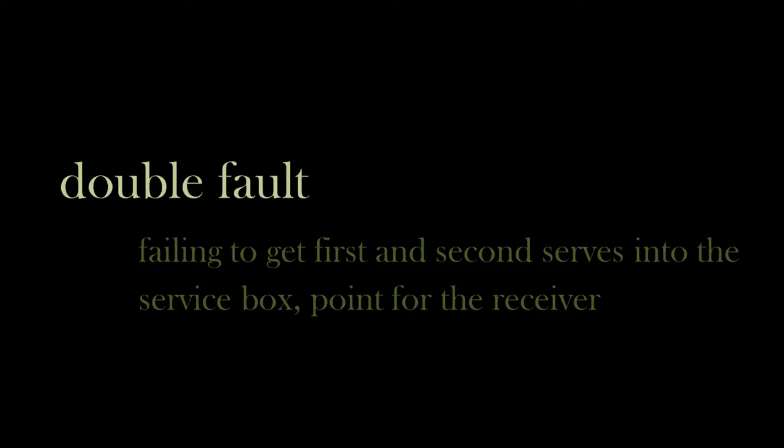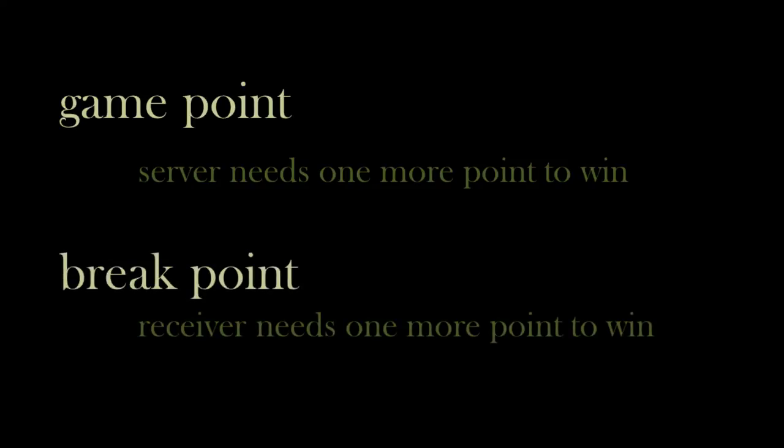At some point you'll probably hear someone make reference to the game point. This means that if the server gets the next point, they will win the game. The opposite of this is that the receiver could win on the next point, and this would be called the break point. You might also hear something called a double game point, which means the server has two chances to get the point to win, so the score is 40 to 15.